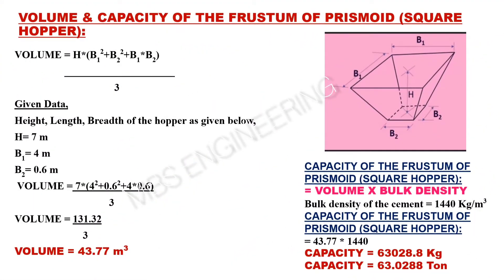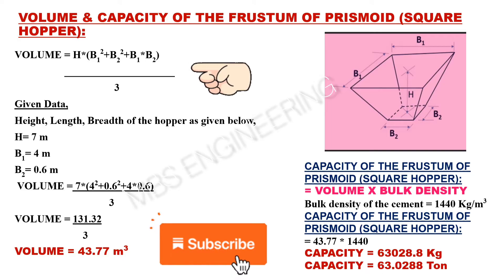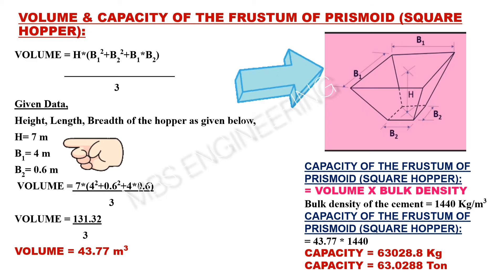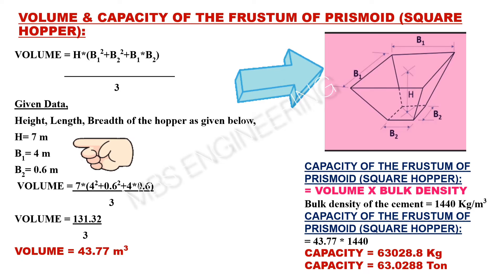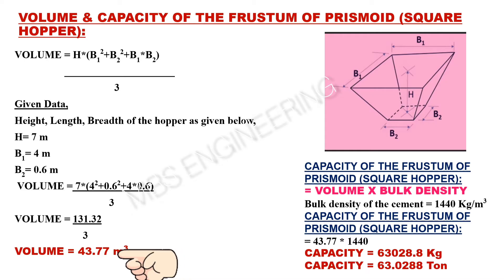Next, we learn about how to calculate the volume and capacity of the frustum of prismoid, a square hopper. The volume calculation formula is: H × (B1² + B2² + B1×B2) divided by 3. Please refer to the frustum of prismoid square hopper snaps and given data. H is 7 meters, B1 is 4 meters, B2 is 0.6 meters. Based on the above equation and given data, the volume of the frustum of prismoid square hopper is 43.77 cubic meters.